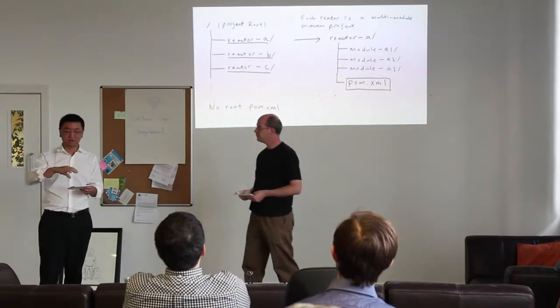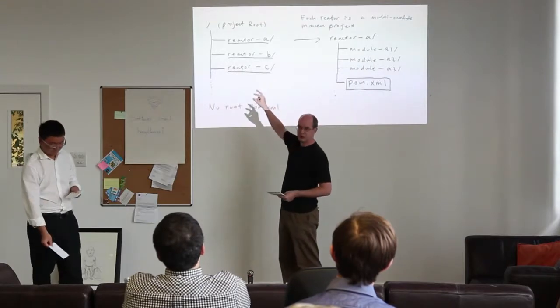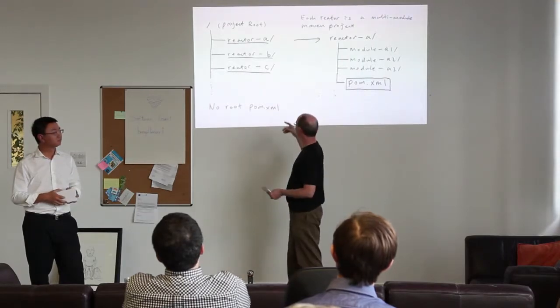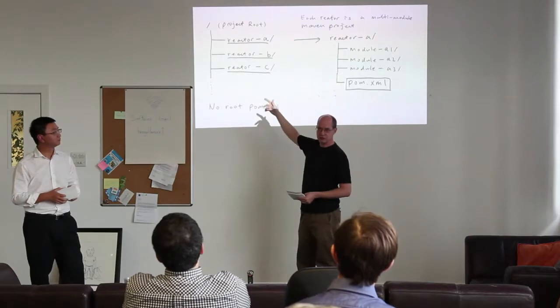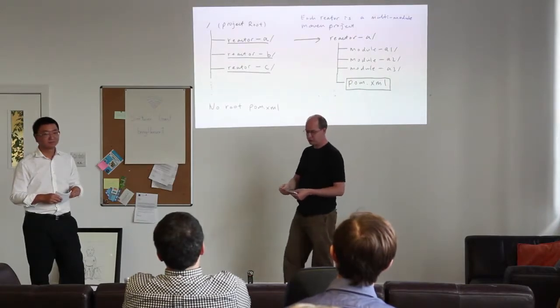We did have a CI server at the time — Jenkins — but it wasn't really respecting the build order. We just didn't know what order it built because they were all snapshots. It was building each reactor, but the order those builds ran was sort of random. If one reactor depended on another, Jenkins didn't know about that, so the feedback from the CI server was unreliable — it could be falsely passing or falsely failing — and slow.